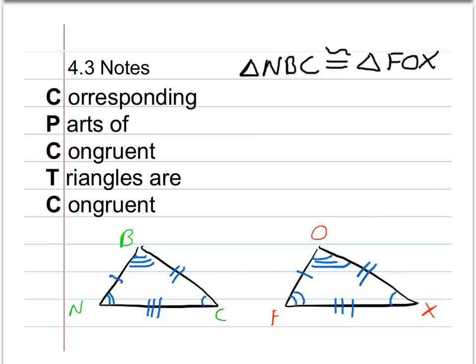So that's what we mean when we talk about corresponding parts. Corresponding basically means parts that are in the same spot. So if I talk about angle N, I see angle N and angle F are both kind of in the first position of the names. So that means angle N and angle F have to be corresponding congruent parts.